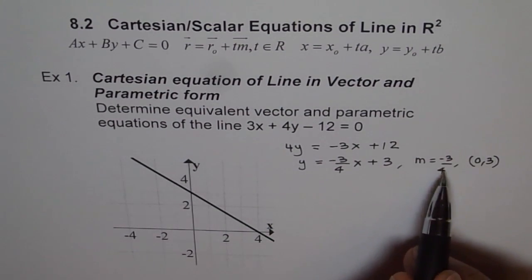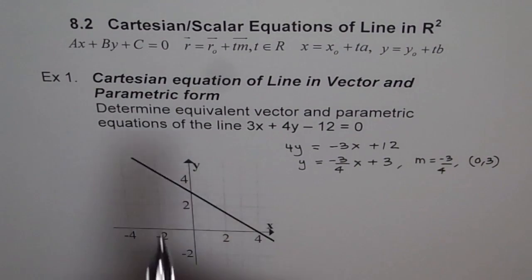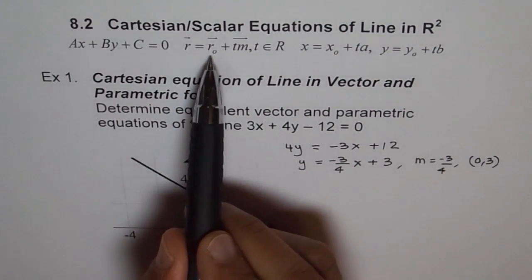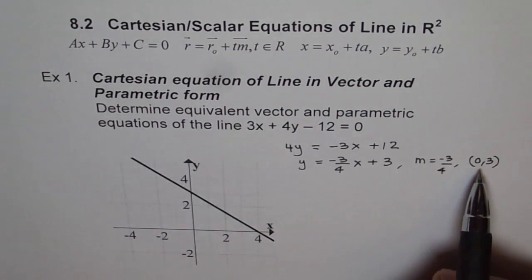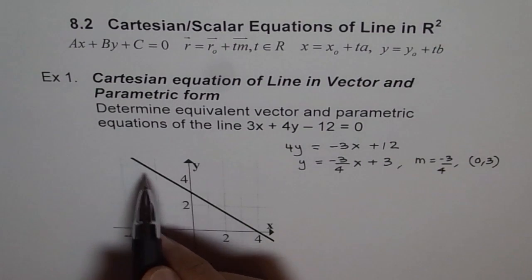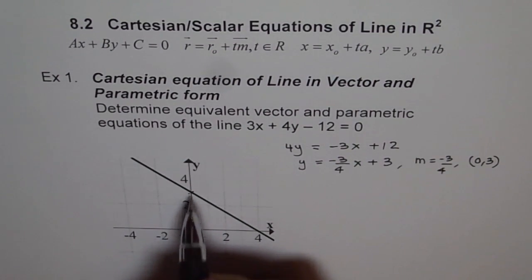Now we will use this slope and this Y intercept to write our equation in the vector form. So vector form equation is right here, where our r₀ is a point on the line. So in our case, the point on the line is 0, 3. And here is a sketch of this line. So 0, 3 is this Y intercept.